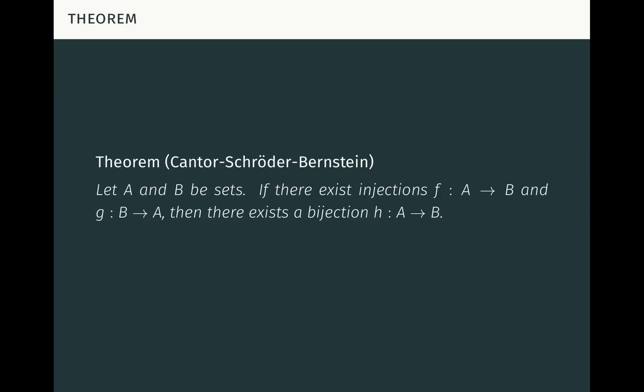Here's a statement of the Cantor-Schroeder-Bernstein theorem. Let A and B be sets. If there exist injections F from A to B and G from B to A, then there exists a bijection H from A to B. I'm assuming you have a basic understanding of set theory and know what a function, an injection, and a bijection are. Another way to state this result in terms of cardinality is that if the cardinality of A is less than or equal to the cardinality of B, and the cardinality of B is less than or equal to the cardinality of A, then the cardinalities of A and B are equal. This result is extremely useful in set theory when you're trying to prove that two sets have the same size, because it allows you to do so by establishing an injection each way as opposed to explicitly constructing a bijection between the two sets, and that's often much easier.